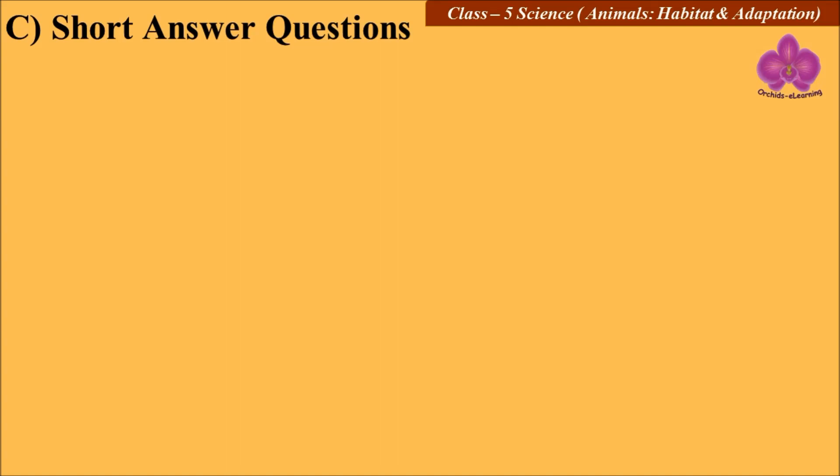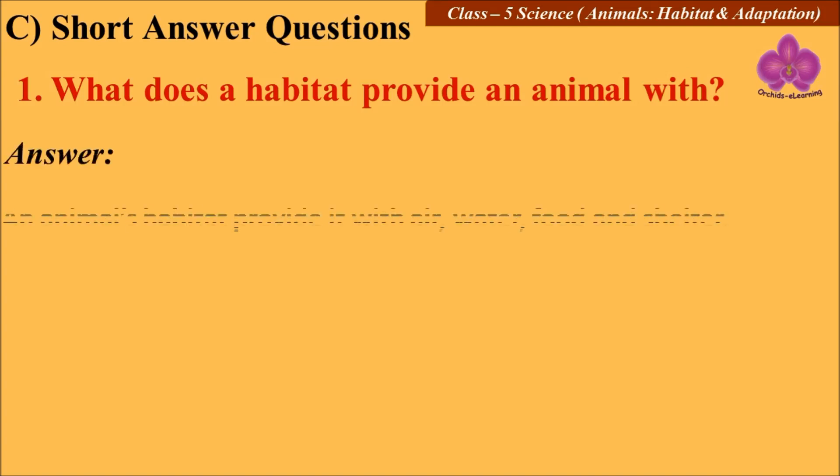Now let's look at the short answer questions. First question: What does a habitat provide an animal with? Answer: An animal's habitat provides it with air, water, food, and shelter.